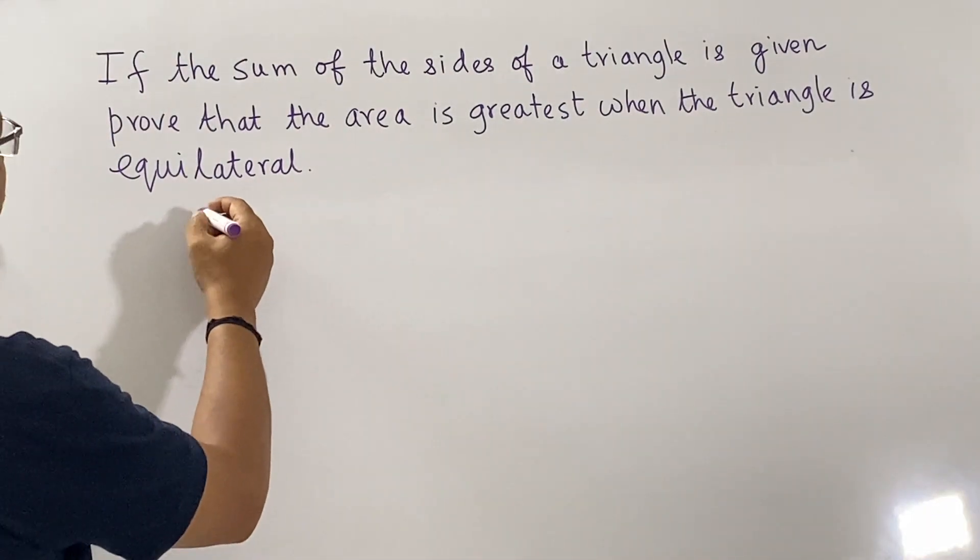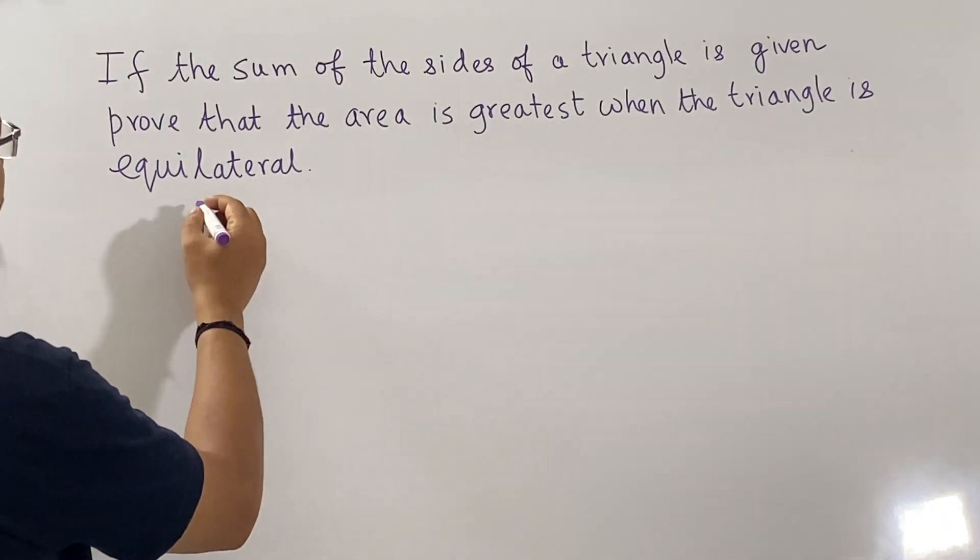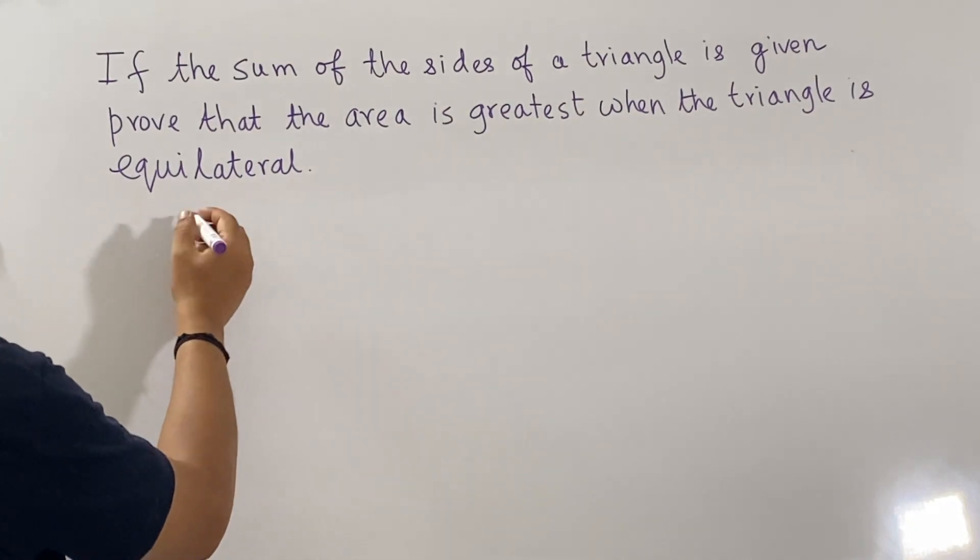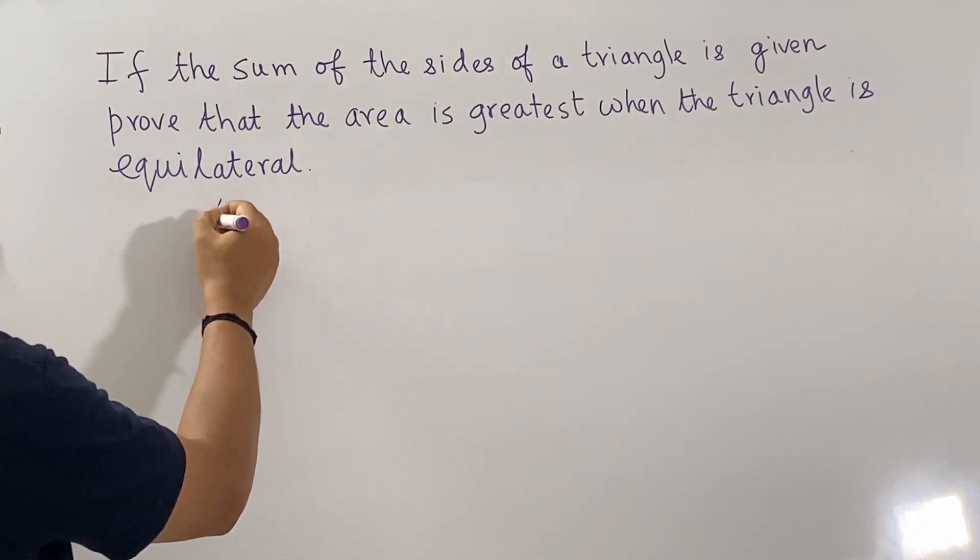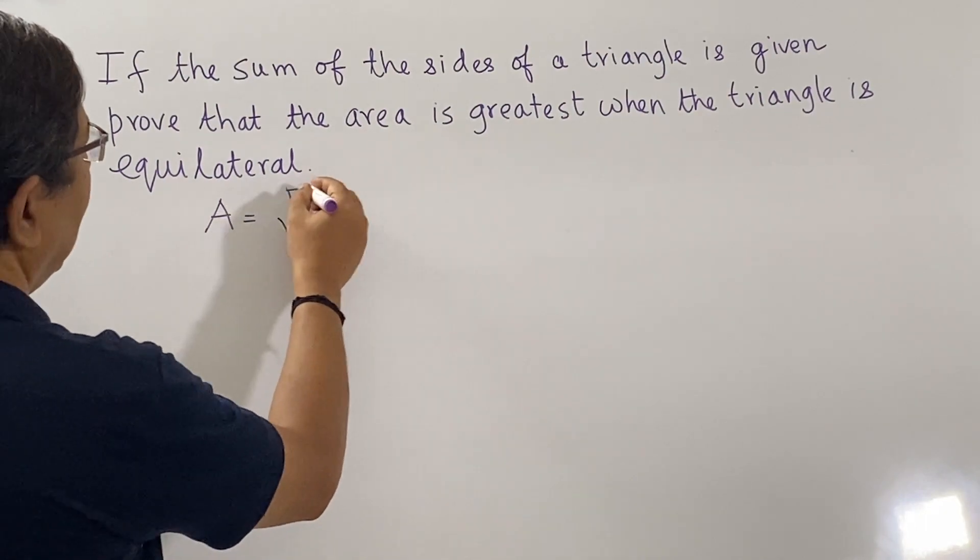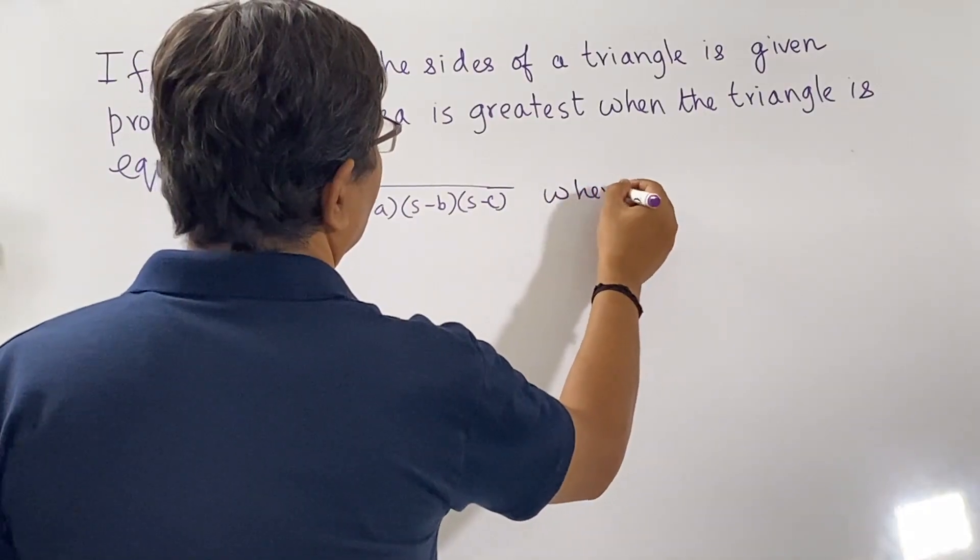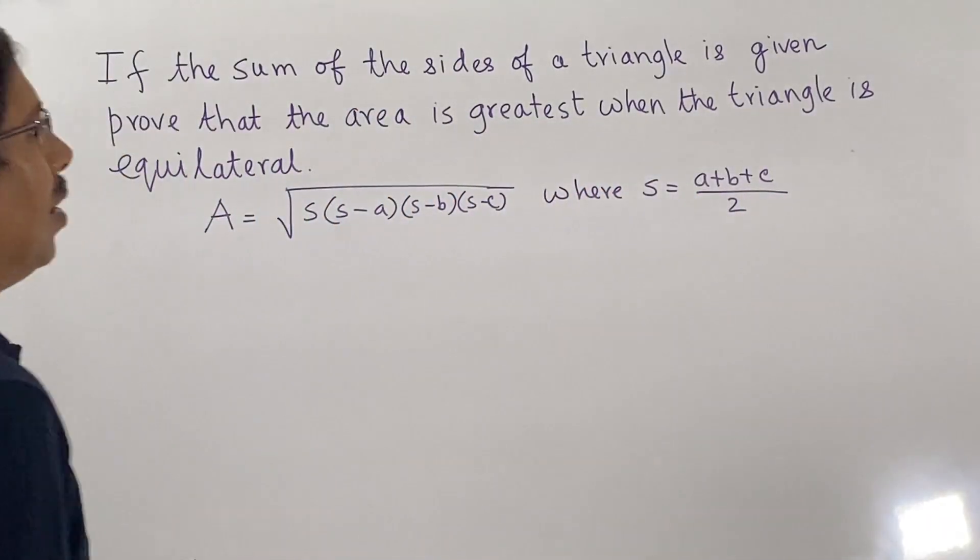Now by Heron's formula we know that for a triangle with sides A, B, C, the area is given by square root of S times (S-A) times (S-B) times (S-C), where S is the semi-perimeter.